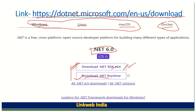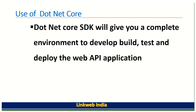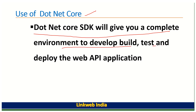The .NET Runtime is basically installed on the server side when you want to deploy your web API on a server or any VPS. You only need to install the .NET Runtime framework for deployment. The .NET Core SDK gives you a complete environment to develop, build, test, and deploy the web application.